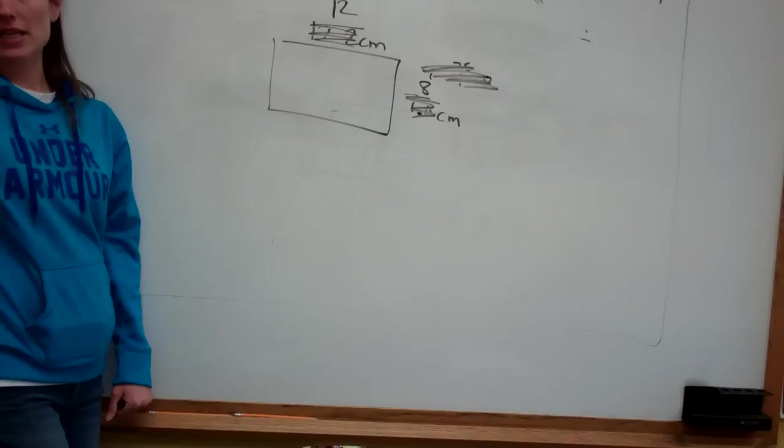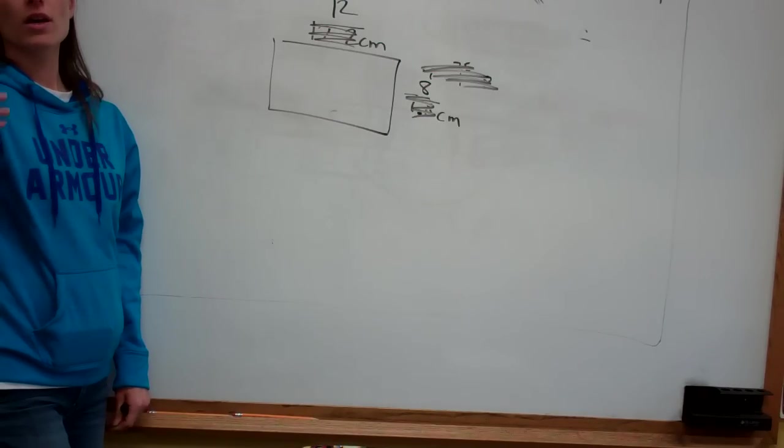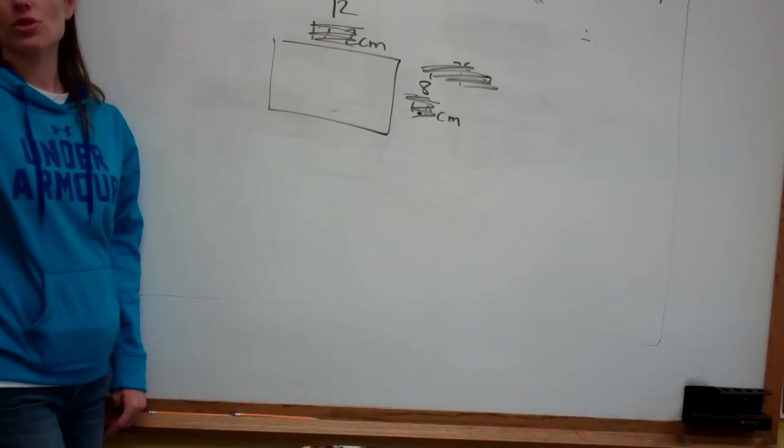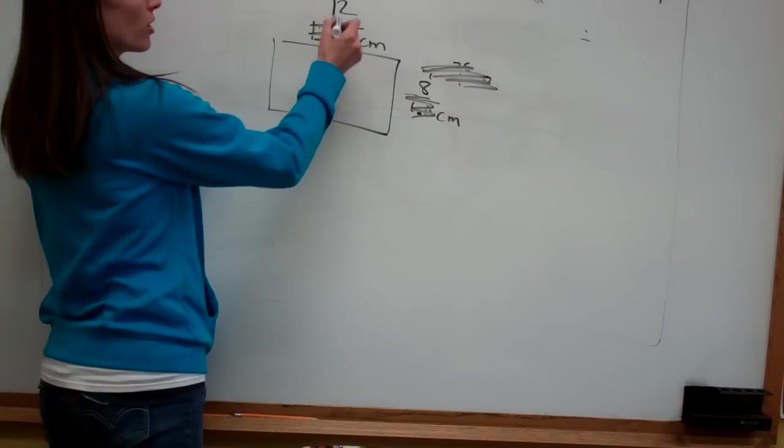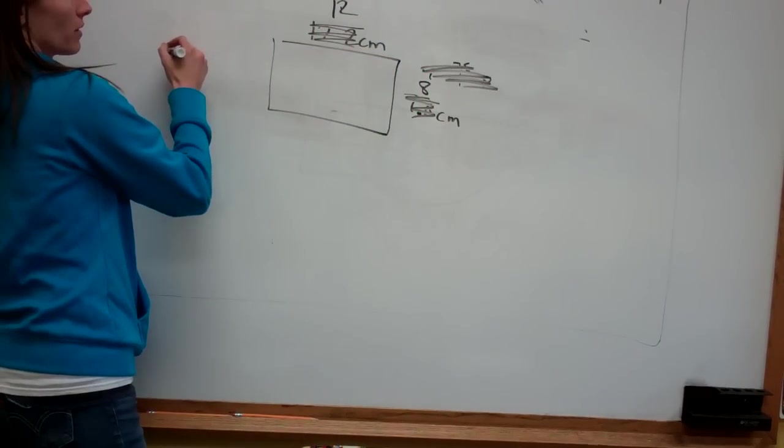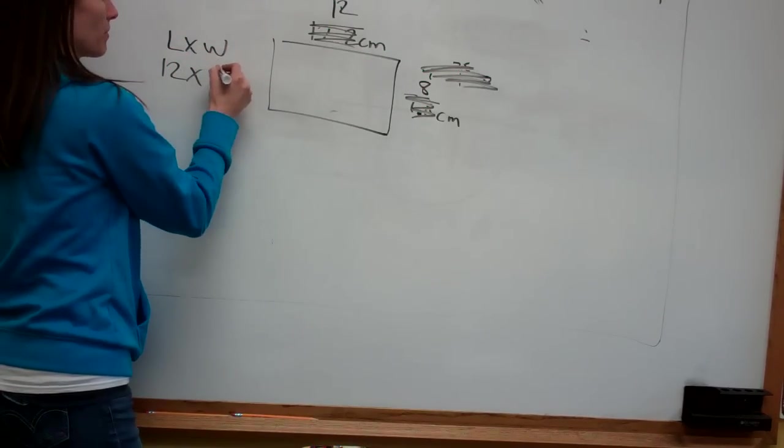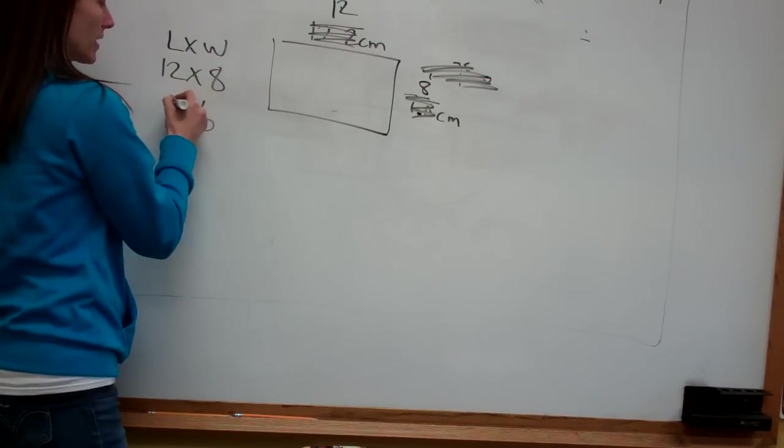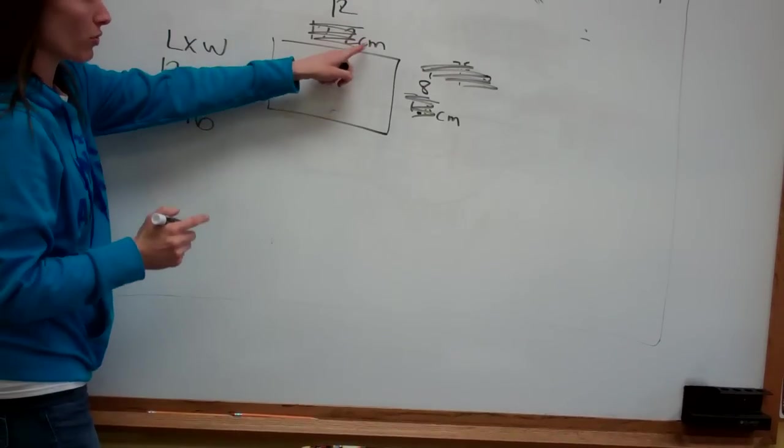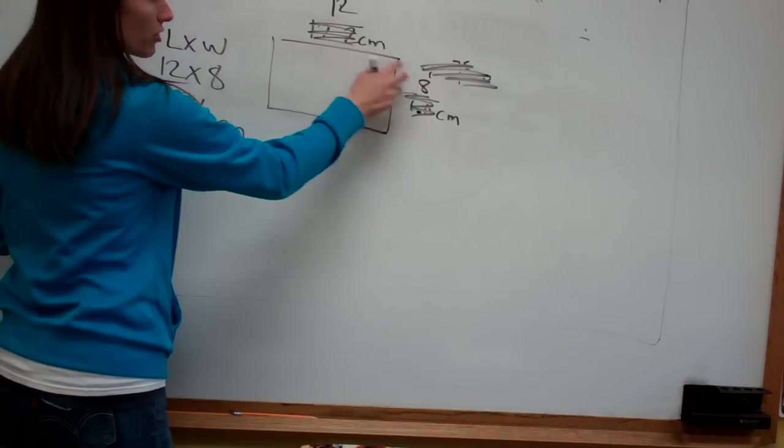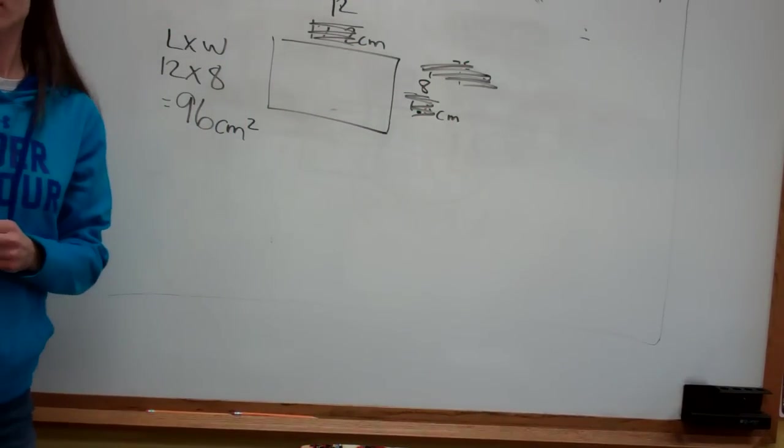Area means length times width. So 12 times 8. Right? I don't know the answer to that. Length times width. 12 times 8. And the answer is 96. And because we're working with centimeters. And there's two of them. You put a 2. Okay?